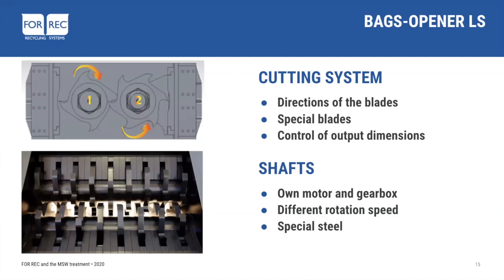The shafts have different RPM — revolutions per minute — driven through an inverter. Blade holders and shafts are made of a special steel with thermal hardening to reduce wear. The blades have a special profile to allow the opening and tearing of the bags without damaging the content. We have the possibility to increase the distance between the blades and to change the shaft revolution to control the dimension of the output material.